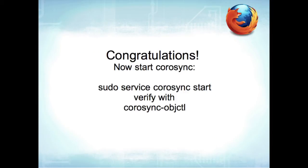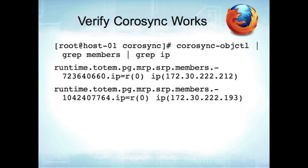Once done configuring Corosync, start it with 'service corosync start' and verify with 'corosync-objctl'. If you grep the output for 'members' and 'ip' you'll see the members in Totem — for example, two IP addresses like 172.30.222.212 and 172.30.222.193 now messaging each other. They're not actually messaging anything yet; all you've done is set up the messaging protocol. It's like setting up a phone line but nobody's said anything yet.